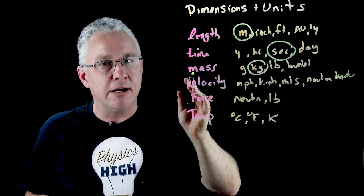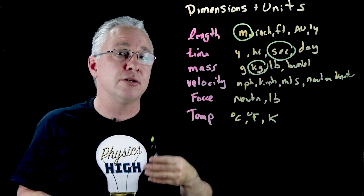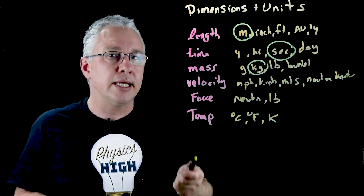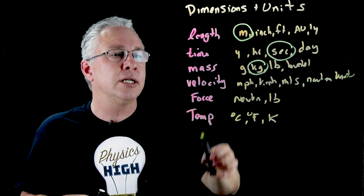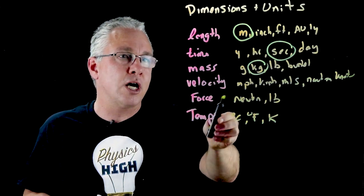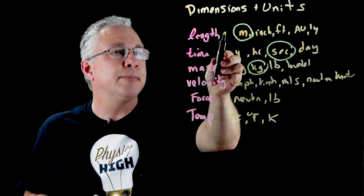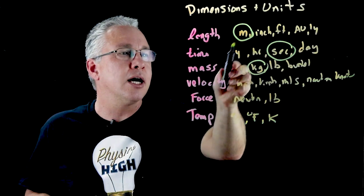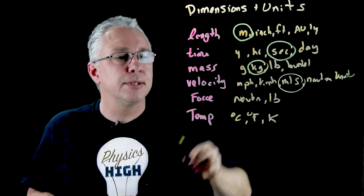In velocity, now velocity is what we refer to as a derived unit, that is it's based on some fundamental unit. Velocity is displacement over time or length over time, so it actually becomes a relation to length and time, so it becomes the meter per second.